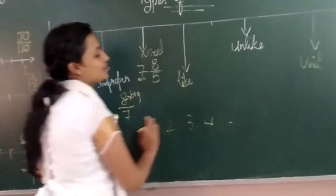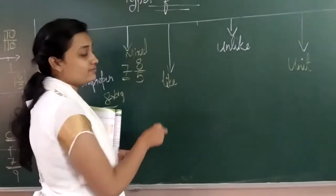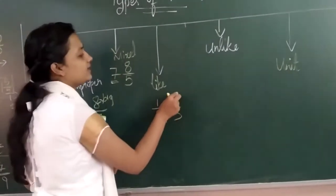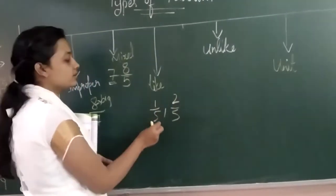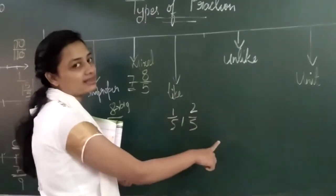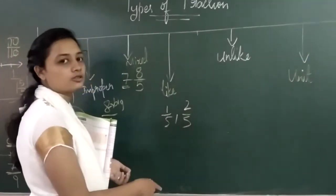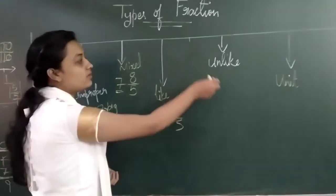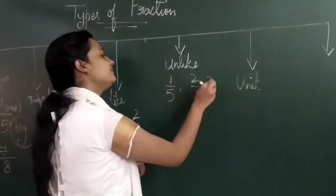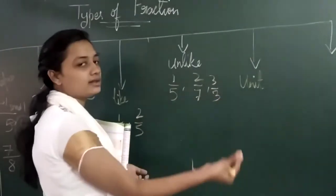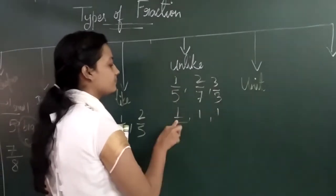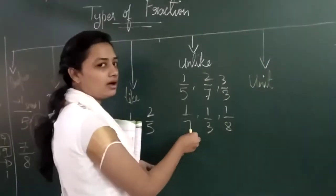Now come to like fractions. For like fractions, I should compare two fractions. For example, 1 by 5 and 2 by 5 — what is common here? The denominator: 5 and 5. Any number of fractions having the same denominator is called a like fraction. The opposite is unlike fraction — any number of fractions having different denominators. Even if the numerators are the same, if the denominators are different, it is called an unlike fraction.